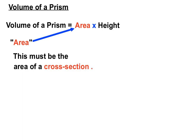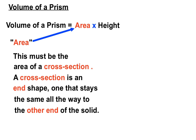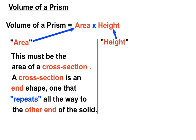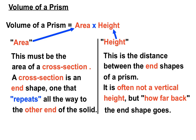The area of a prism that we use to find the volume must be a cross-sectional area — the area of a cross-section. A cross-section is an end shape; you look for a shape on the end of a prism that stays the same all the way through to the other end. The height of a prism is the distance between the end shapes, and it's often not vertical — it's often how far back the end shape goes until it gets to the other end.